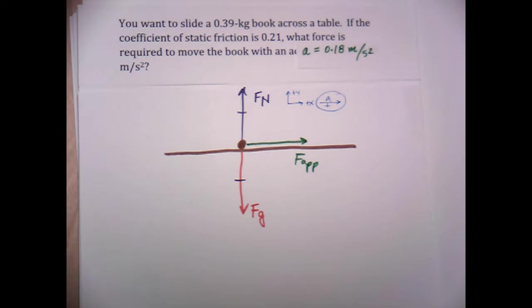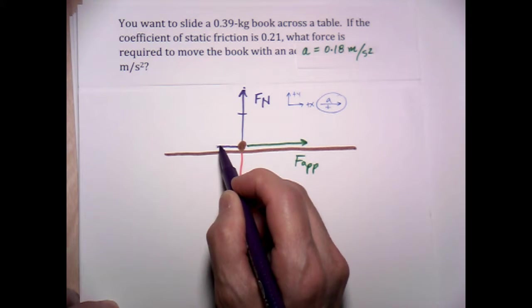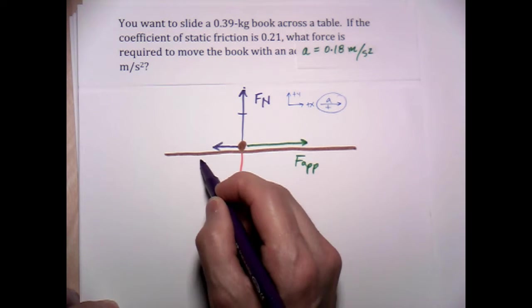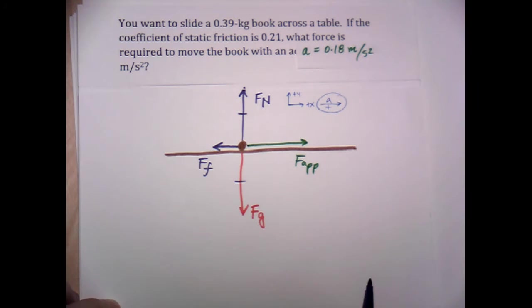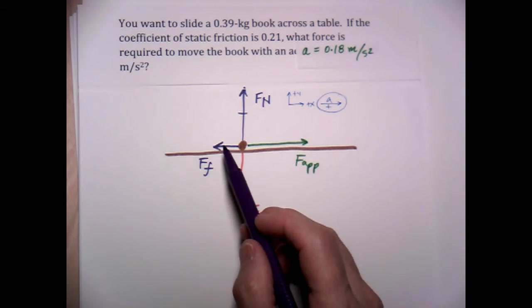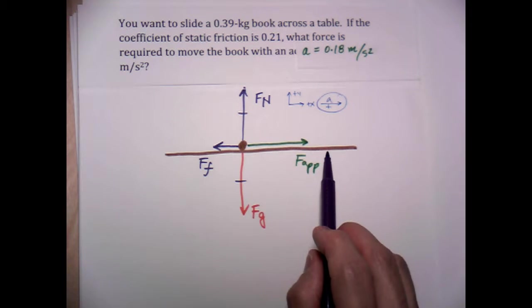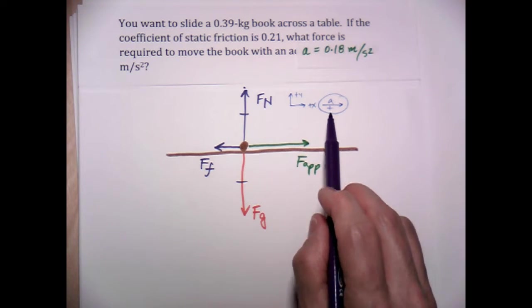And so then what that means is the frictional force, of course, points in the opposite direction. But the frictional force arrow needs to be shorter than the applied force arrow. And that's because they do not cancel each other out. In other words, there's a net force to the right. That's what's causing the acceleration to the right.